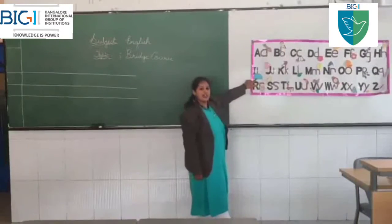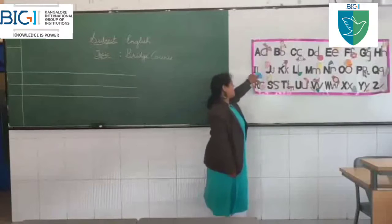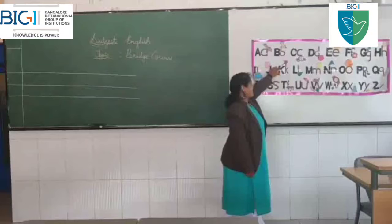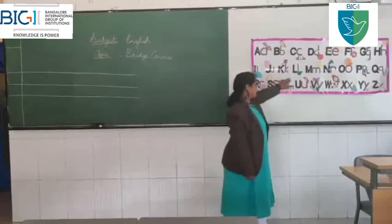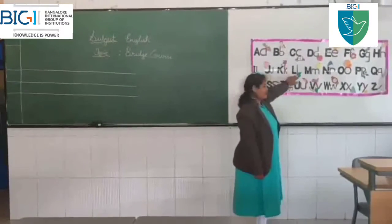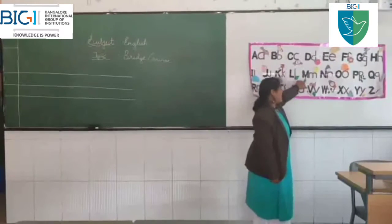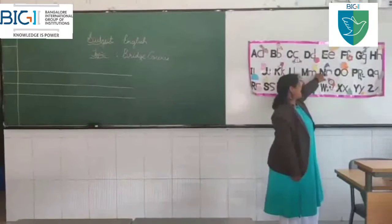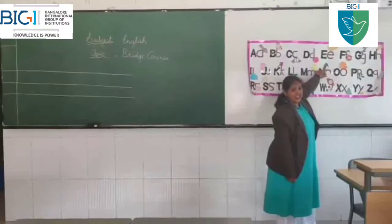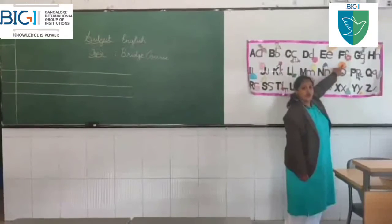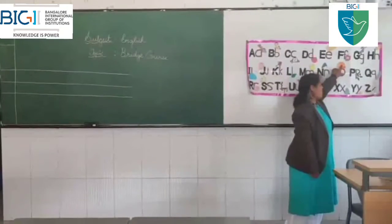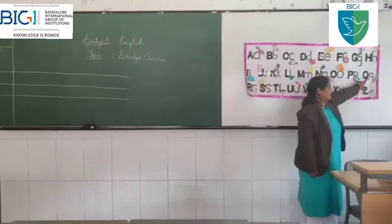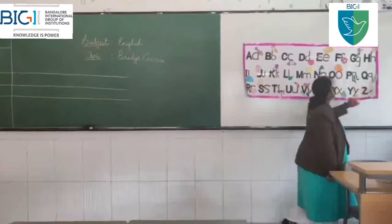N is for eagle. J is for duck. K is for kite. L is for love. M is for mango. O is for orange. Q is for quill. R is for rose.